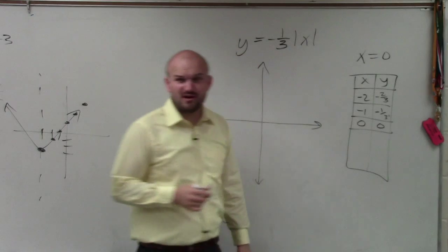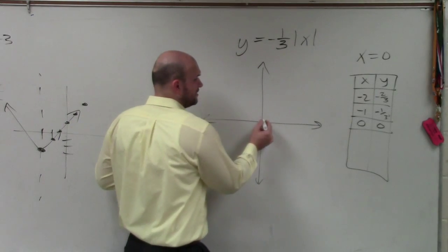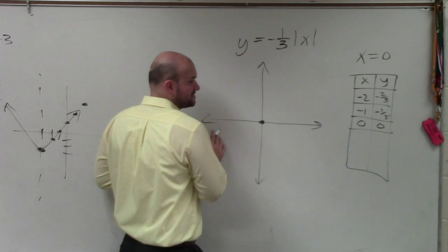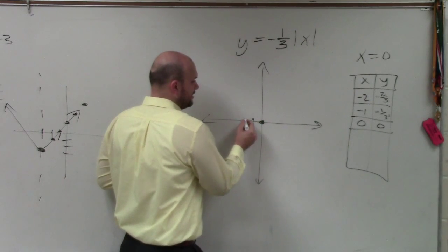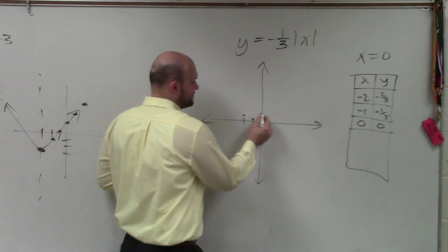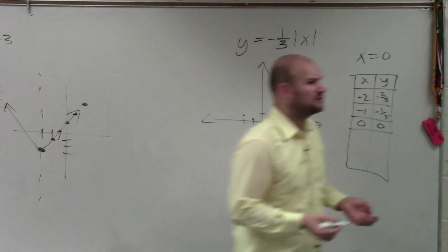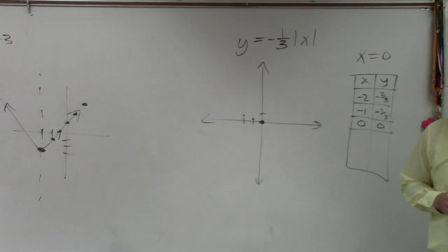Does anybody really like graphing fractions? No. But it's possible if I start at 0, 0, which is my vertex, I go down to negative 1, I only go up negative 1 third. Go over negative 2, I now go up negative 2 thirds. It's possible to graph fractions, but it's really not ideal.